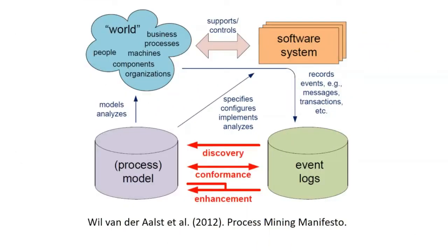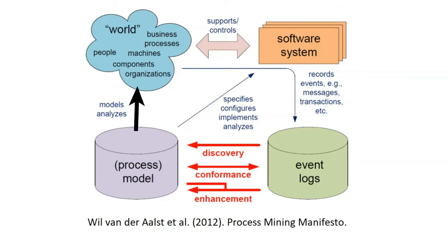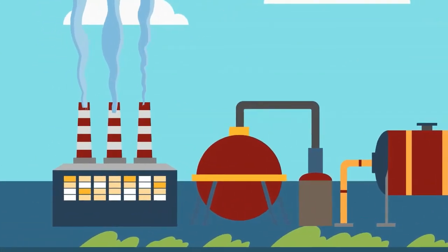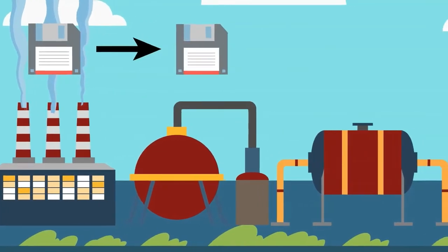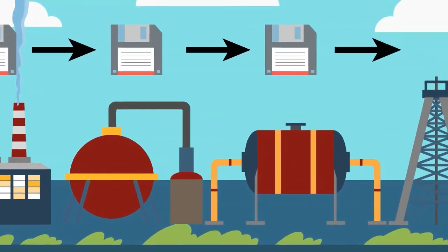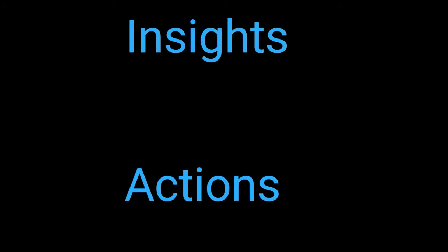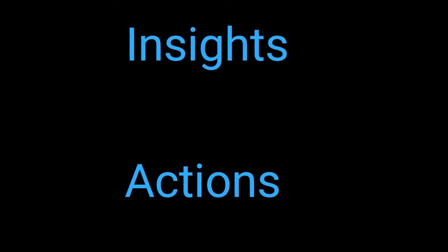This could mean that the process mining application directly interacts with the enterprise resource planning system of an organization, so that it can help with efficient allocation of available resources. Process mining will play a key role in creating digital twins of production lines, airports, supply chains, hospitals, and other organizations. As process mining matures, the gap between insights and actions will become increasingly smaller.